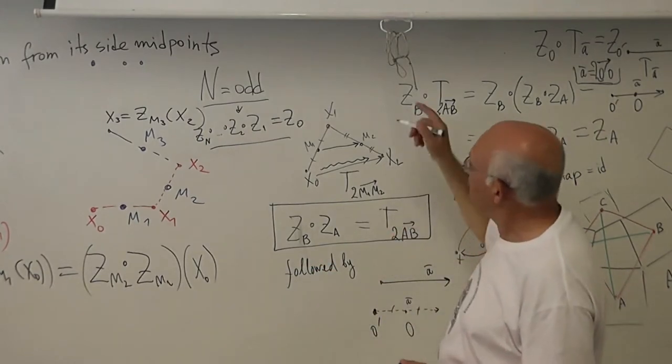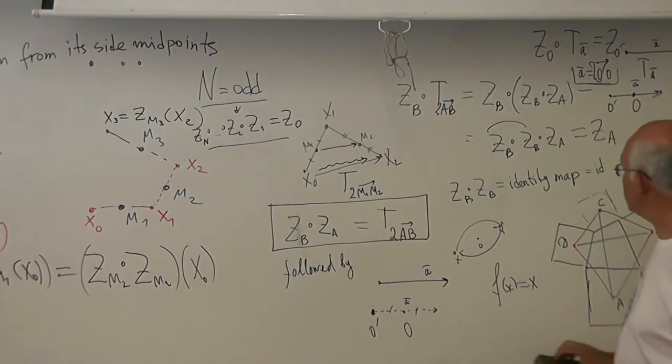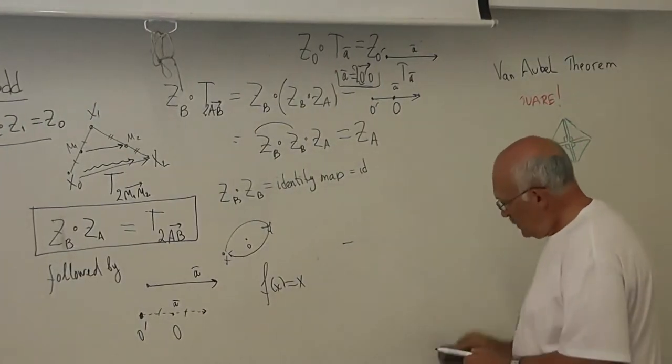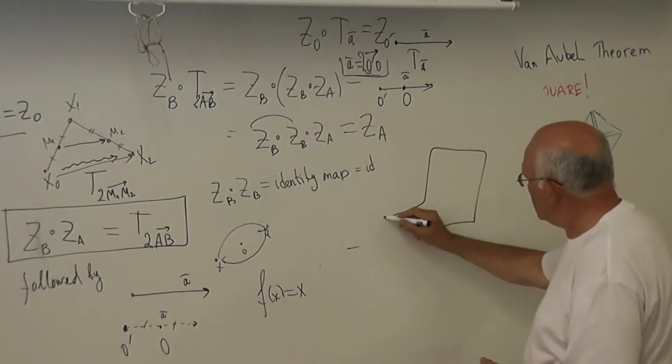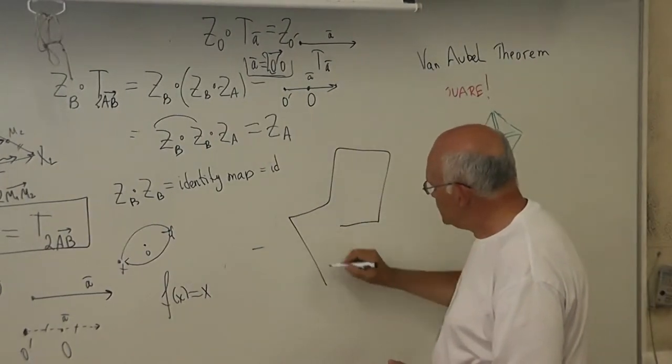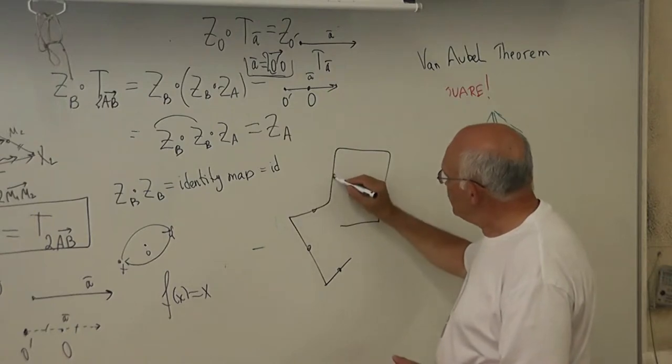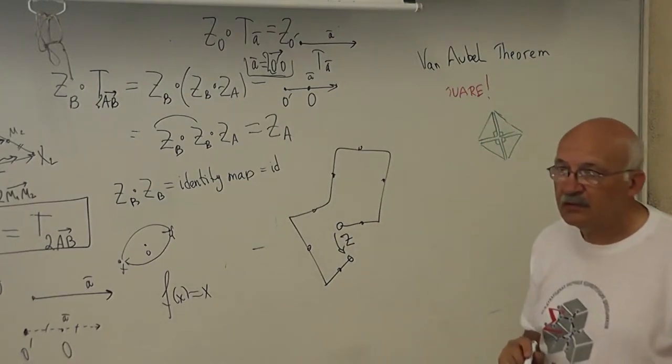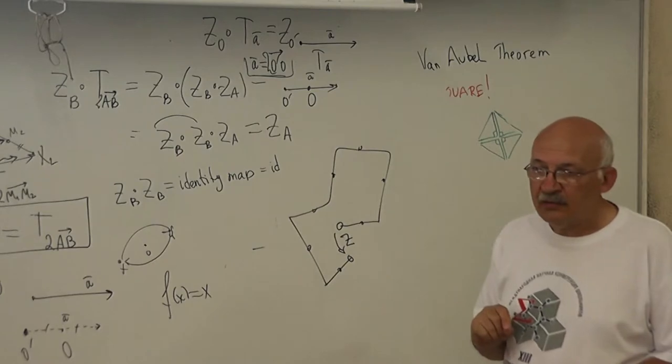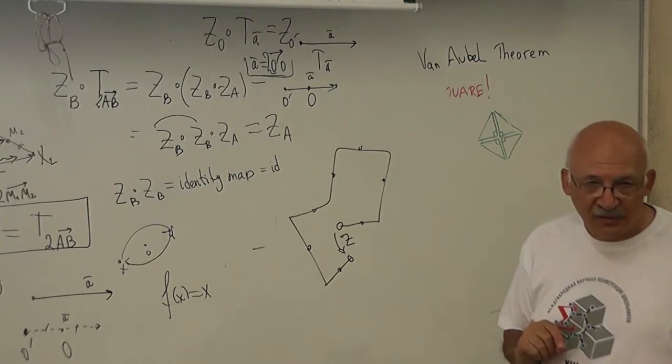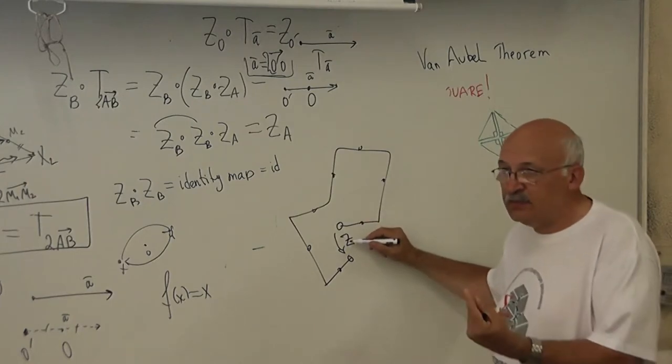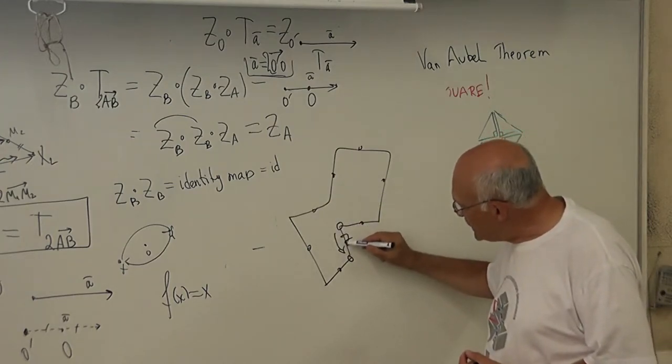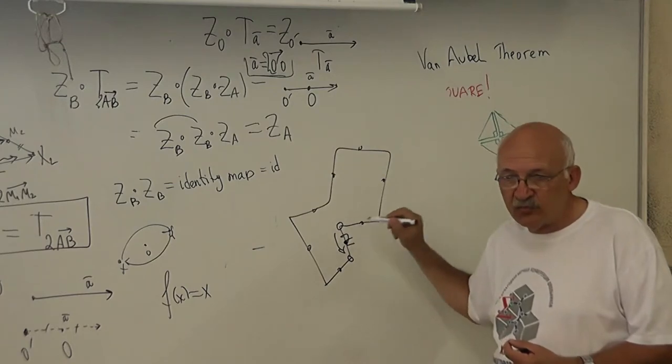When I build this polygon, the transformation which translates this point to that point is the central symmetry. The center of symmetry must be where? In the middle. The center of the symmetry between these two points. And this will be the complete solution.